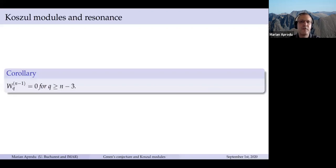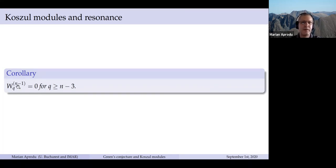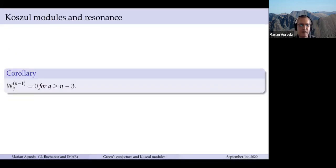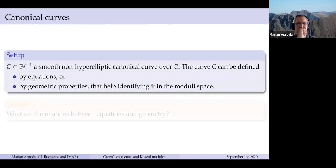As a corollary, for the Weyman modules defined in a representation-theoretic setting, we have this vanishing: W_{N-1,q} is zero for q at least N minus three. This result will be very useful in the study of equations of canonical curves and their syzygies.